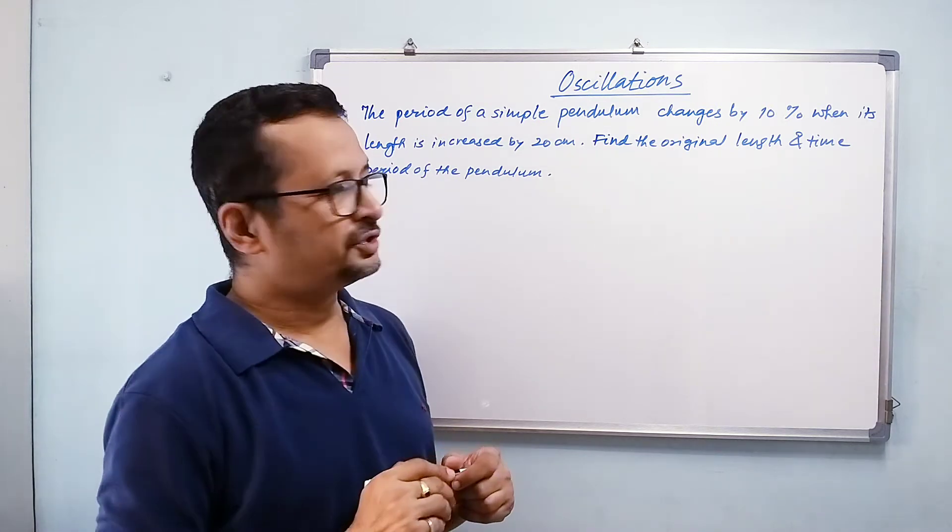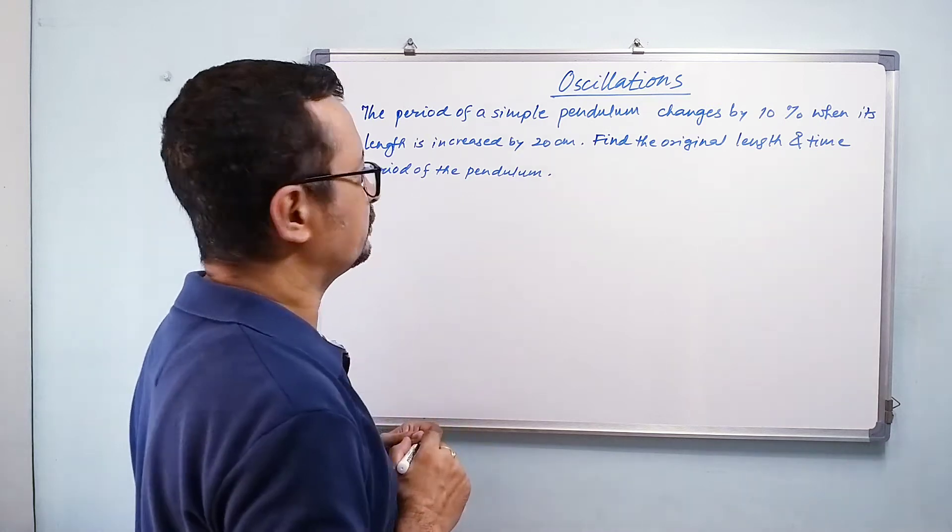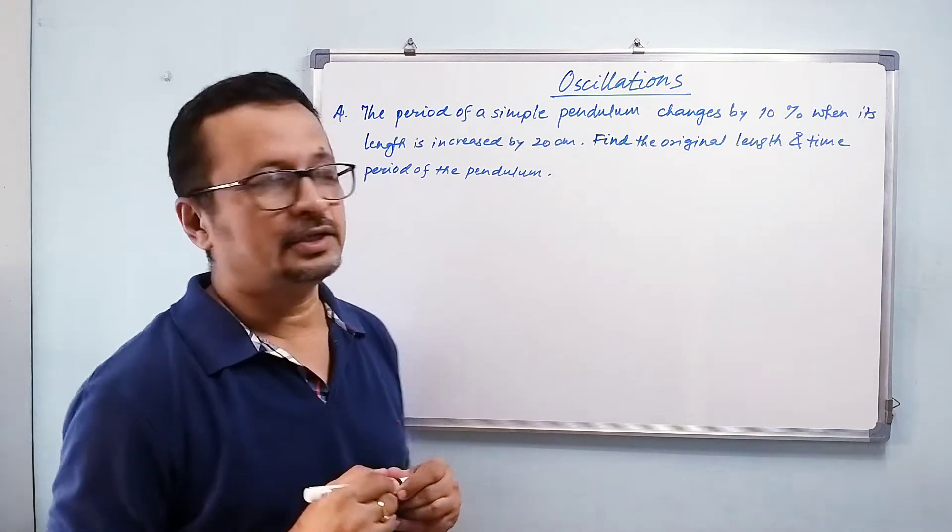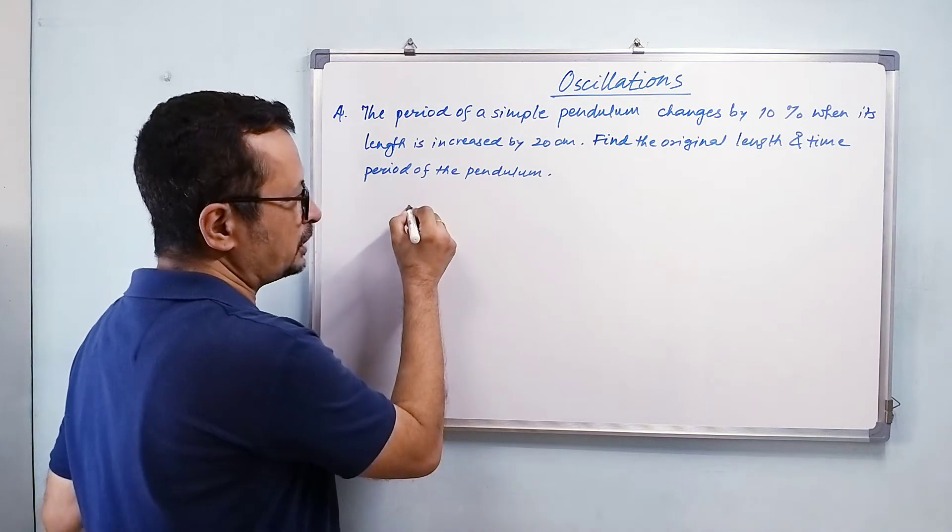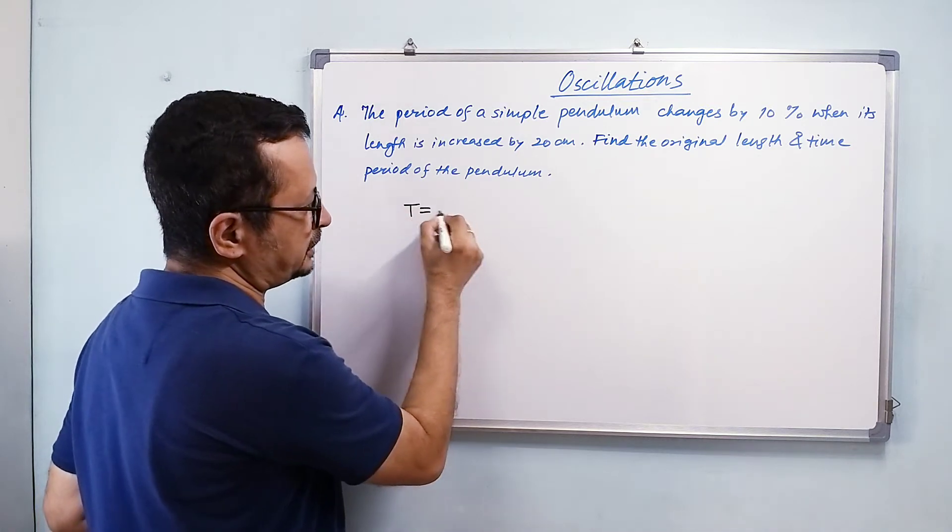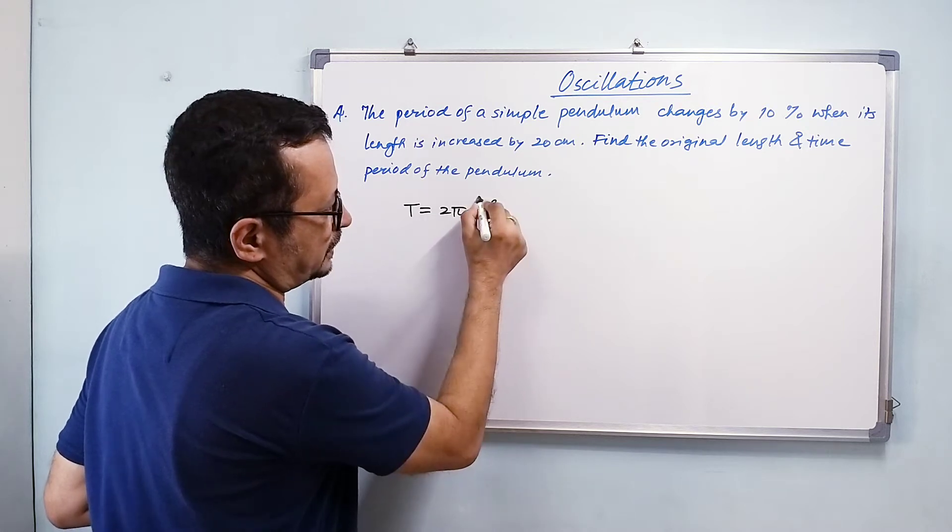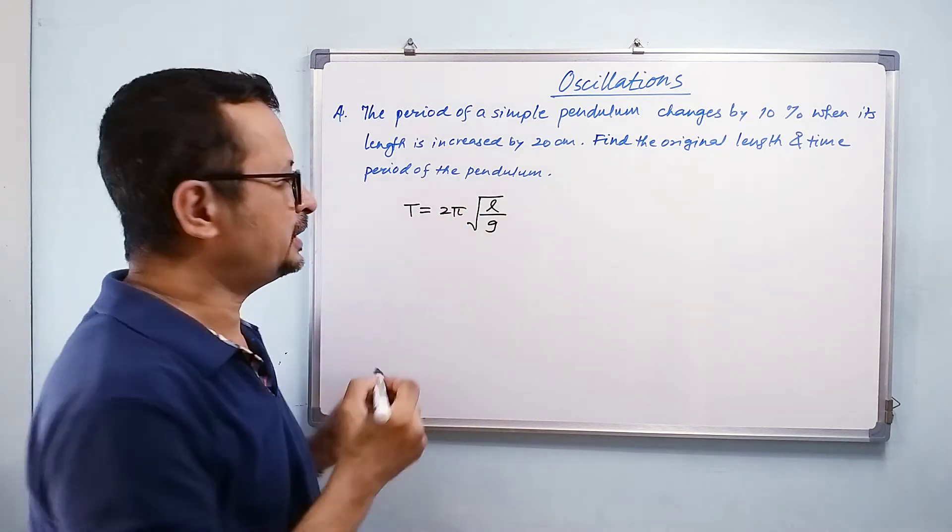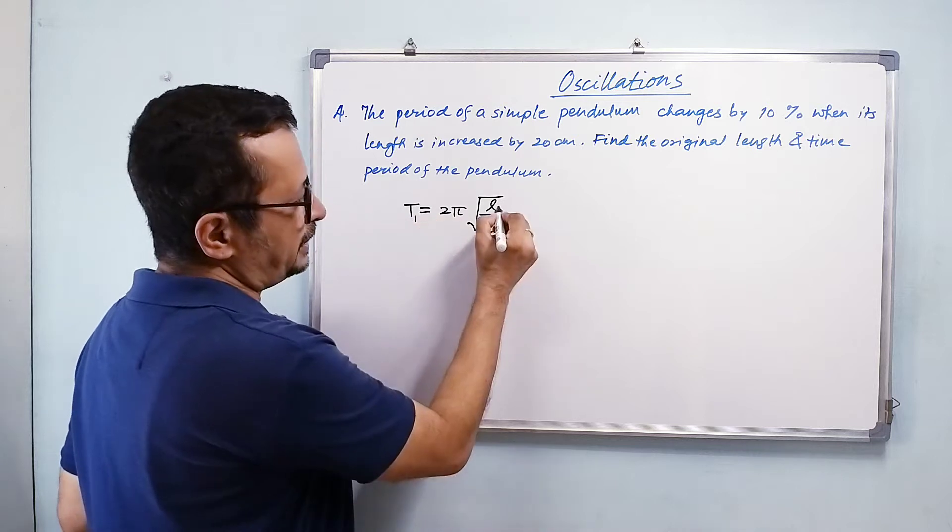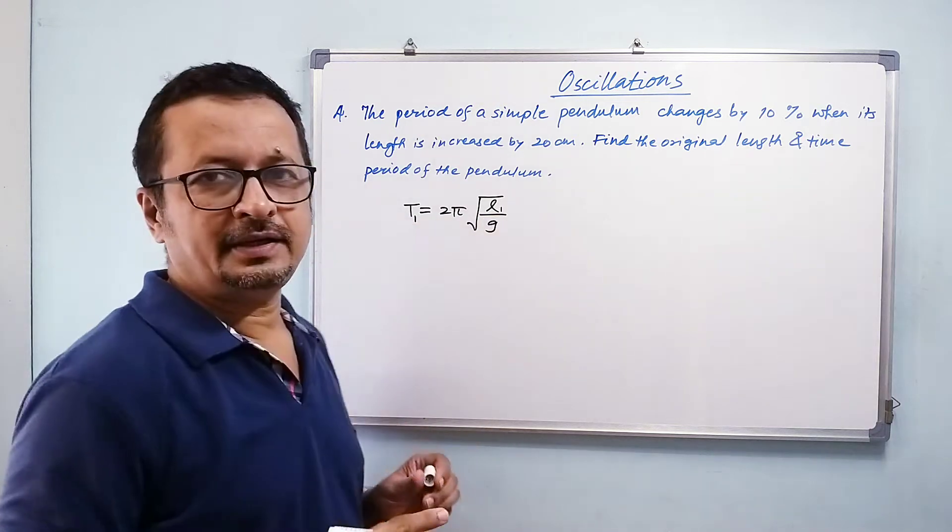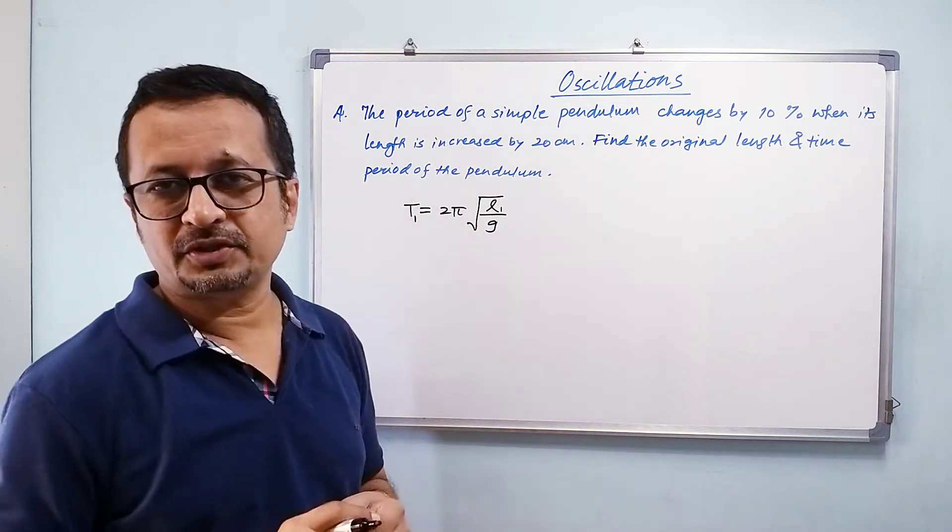Find the original length and time period of this pendulum. Now first, I'll write down the formula for time period: T = 2π√(l/g). If initially my period is T₁ and length is l₁, this is the formula, this is my expression number one.